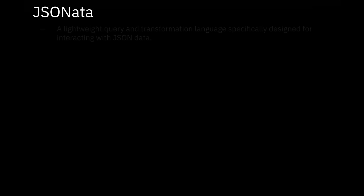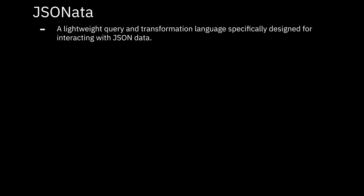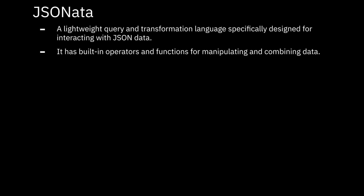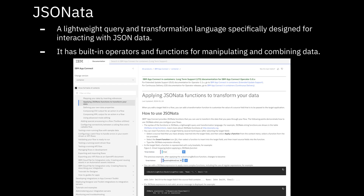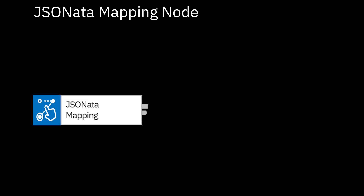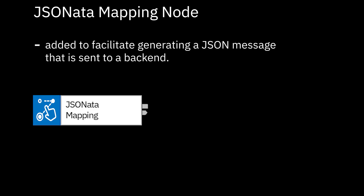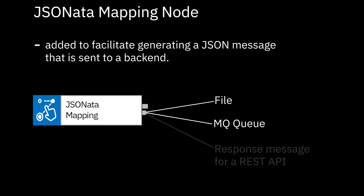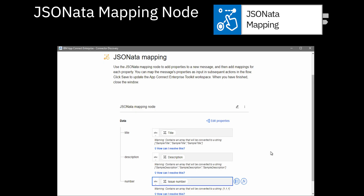JSON-ARTA is a lightweight query and transformation language specifically designed for interacting with JSON data. It has built-in operators and functions for manipulating and combining data. You can apply JSON-ARTA mapping to fields in the message that is being built. A JSON-ARTA mapping node has been added to facilitate generating a JSON message that is sent to a backend — for example, a file, an MQ queue, or perhaps as a response message for a REST API. The node conveniently uses the same JSON-ARTA mapping wizard that is available in the existing discovery connectors, so that it is familiar to use.